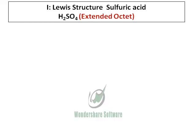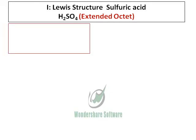Now let's do the Lewis structure of sulfuric acid. Sulfuric acid has got two kinds of structure: one with an extended octet, one without the extended octet. So before we proceed, we will just calculate the valence electrons on sulfuric acid.